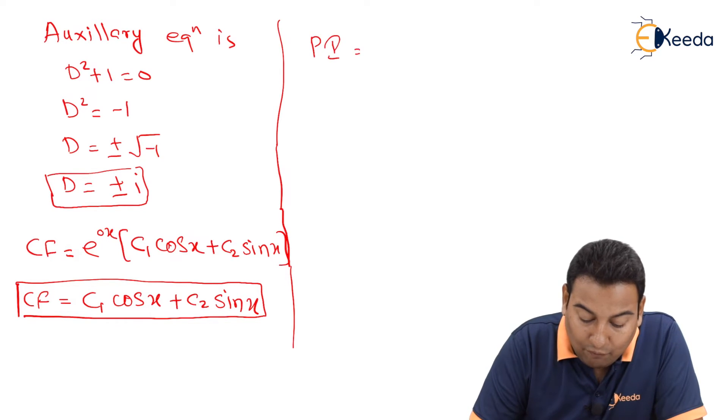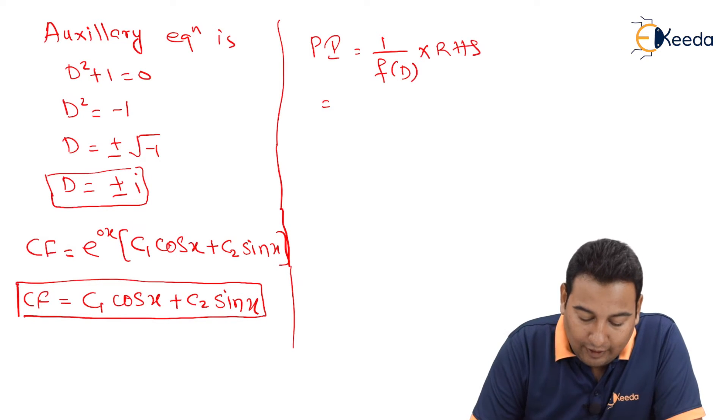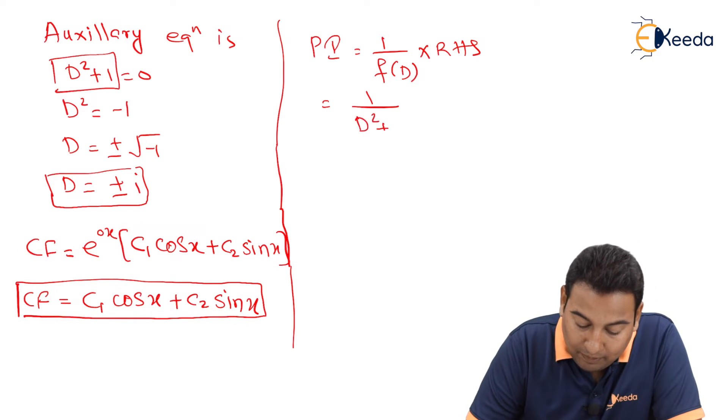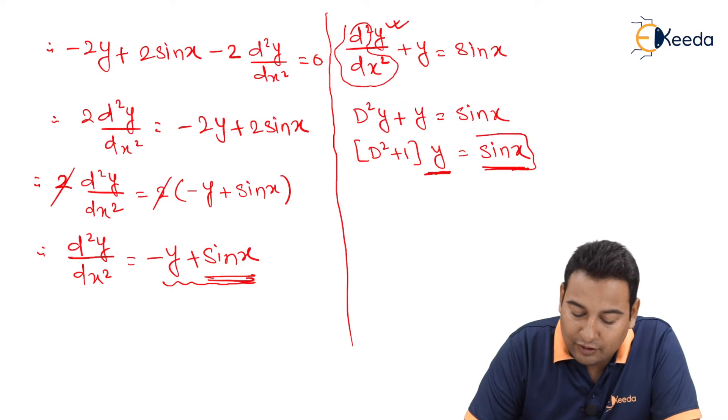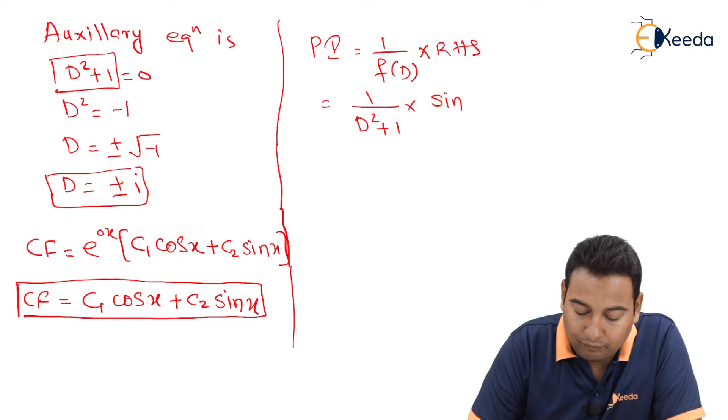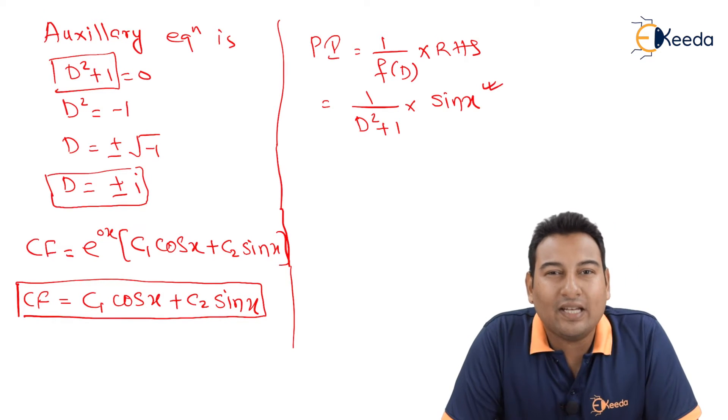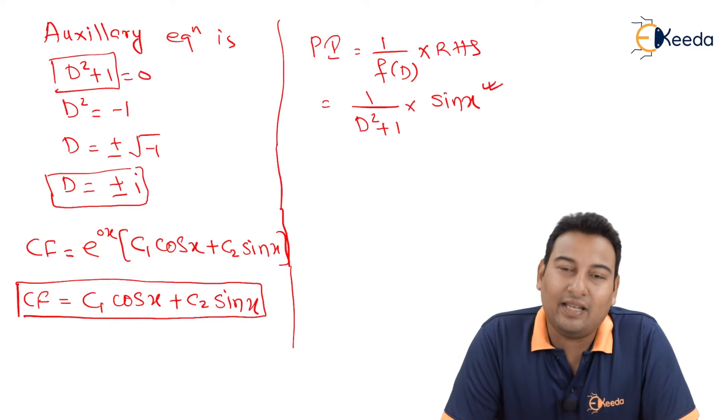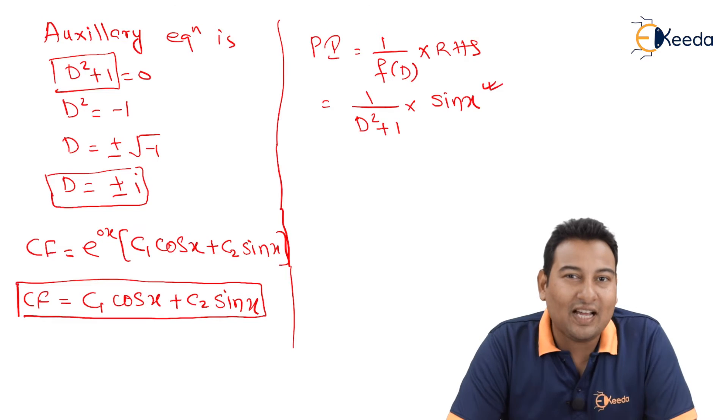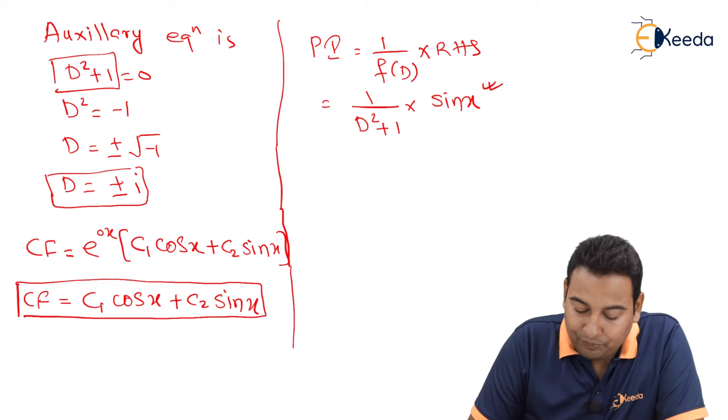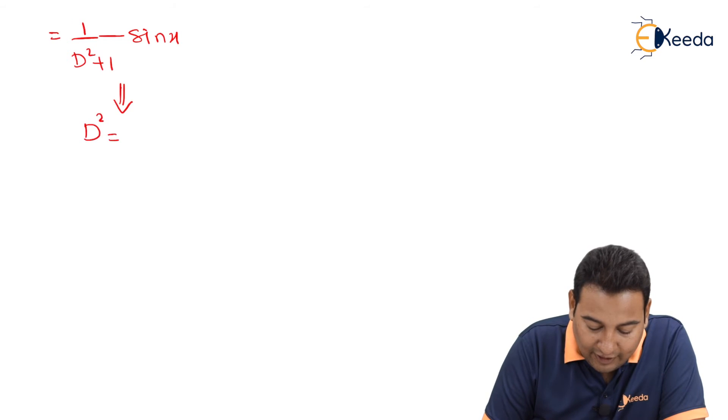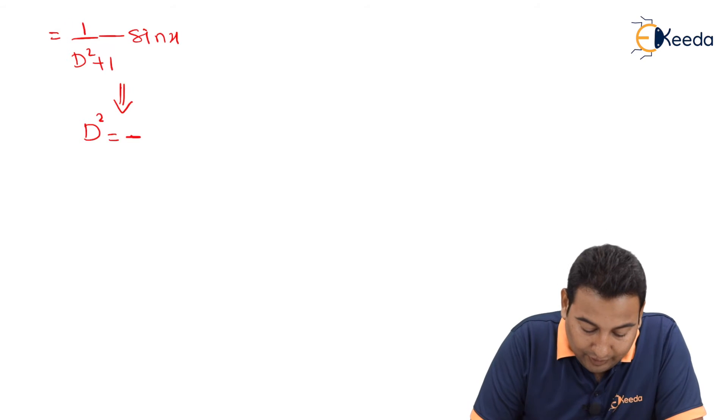But we know solution is not exactly only CF. It is CF plus PI. We need to find PI also. And the formula is 1/(f(D)) into RHS. f(D) means this, whatever in auxiliary equation. Here it is D² plus 1 into RHS. RHS friends is sin x. By looking at this, you can conclude this is type 3. This is type 3 of PI. In type 3, we replace D² with minus a². Minus fixed and a. Here friends, a is 1. Sin x, a is 1.